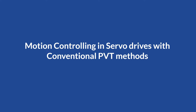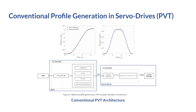In a commercial servo drive, there is a method called PVT, standing for position, velocity, and time. The user is on the most exterior side of the diagram. You have a host computer or embedded system communicating through a data line to a servo drive. On the host side, you have an engine that computes all the points for the servo drive to follow a certain trajectory, which we call a PVT encoder.